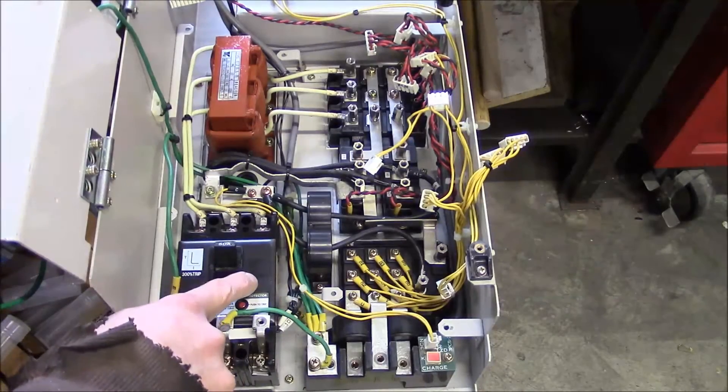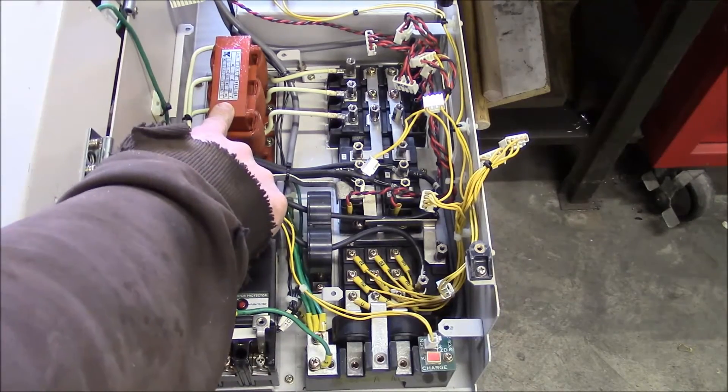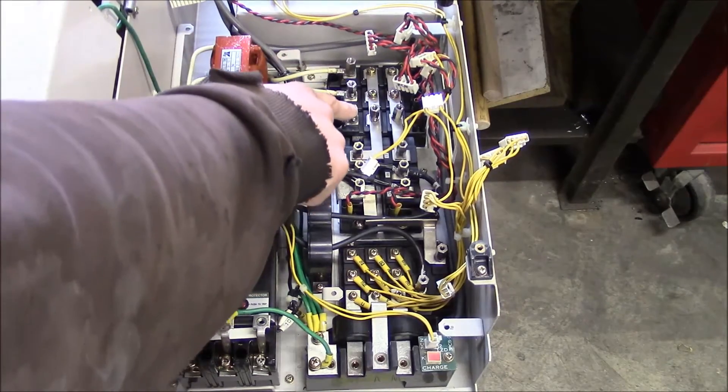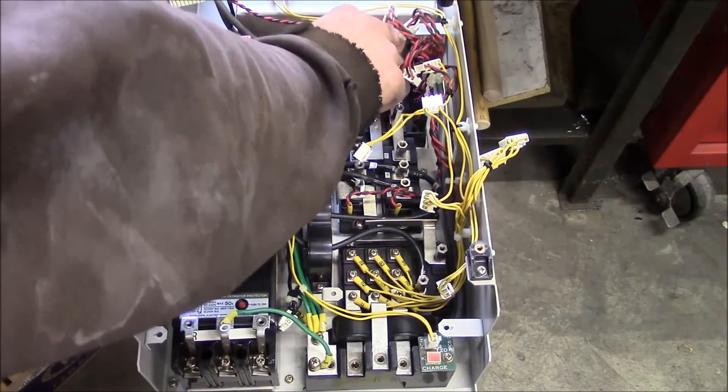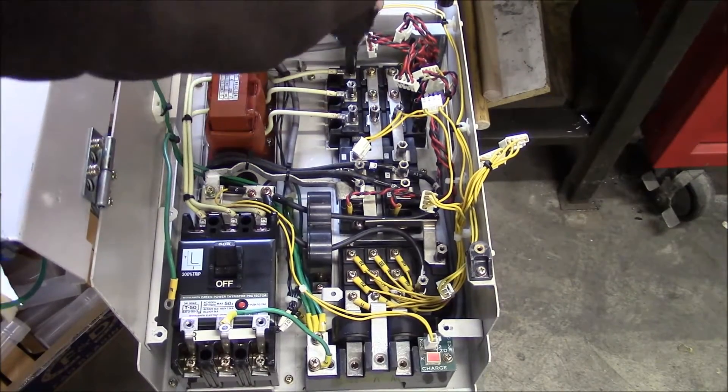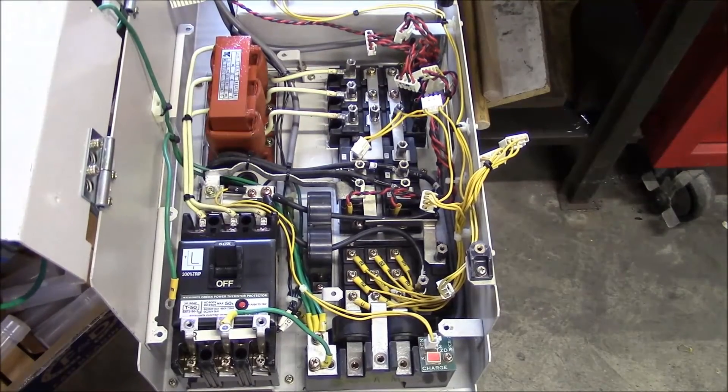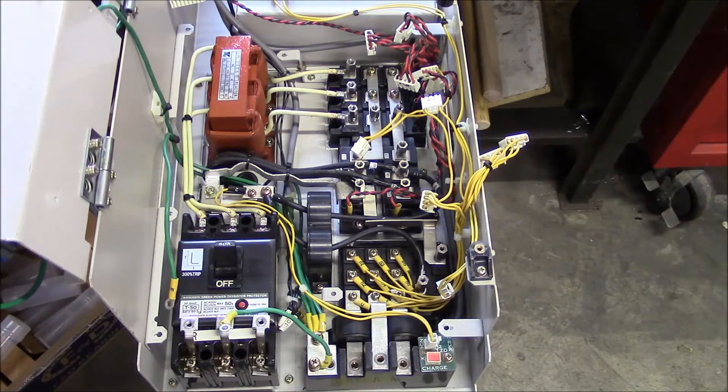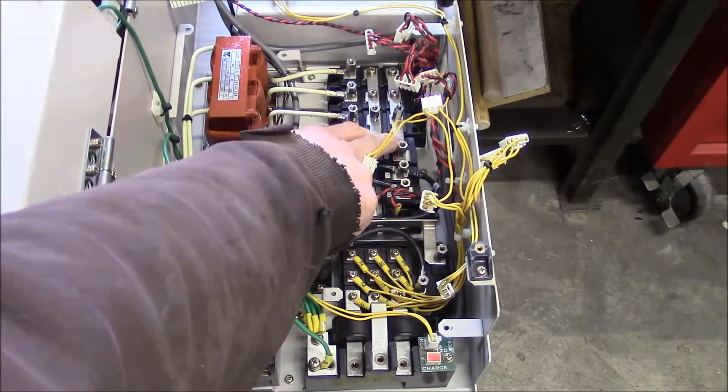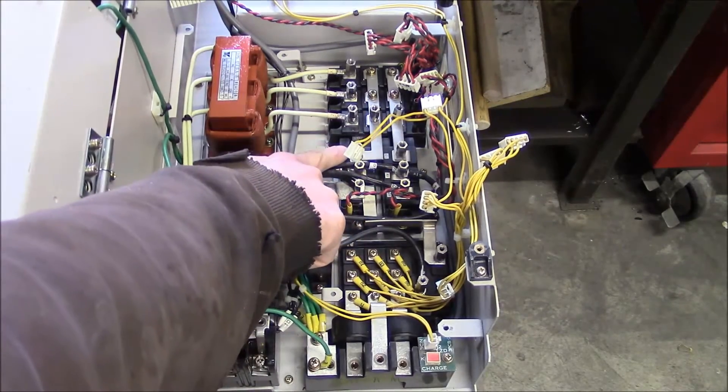So this is the main input on this 50-amp breaker. It goes through a reactor to clean it up and then into these three thyristors. And that's basically a rectifier. Oop, that one's loose. I've got poor quality control here in the repair department. Anyway, so this is the rectification. These two bars here are the DC bus. And then they come into these two Mitsubishi IGBT modules.